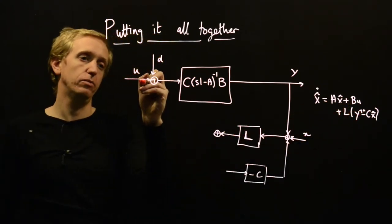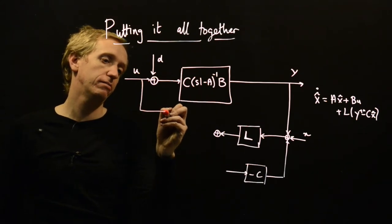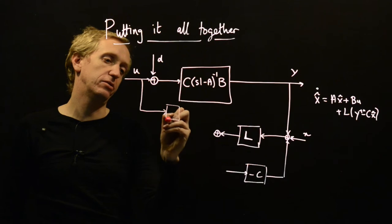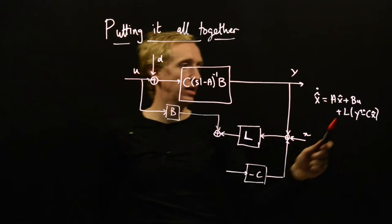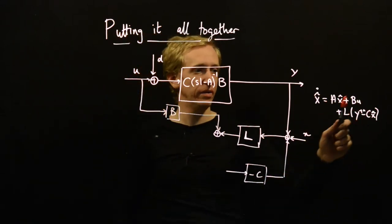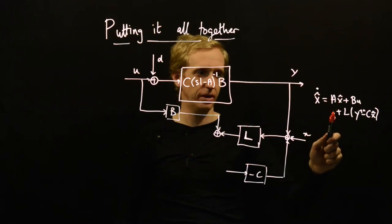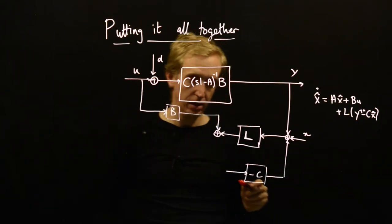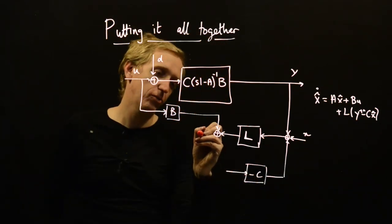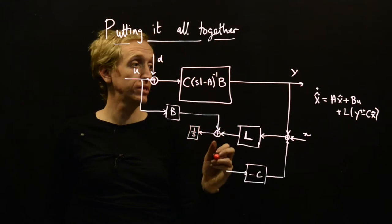And BU, how do we get that? We take something down here, feed it into a matrix B, and then sum it in. We've dealt with this. We've now got to deal with introducing X hat and also this X hat dot and this AX. So what's the right way to do this? The right way is to put in an integrator. So we're going to have a 1 over s here.